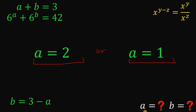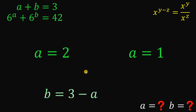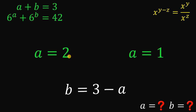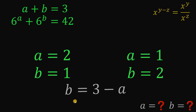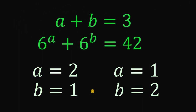Our goal is to find the values of A and B, and recall that B must equal 3 minus A. So if A is 2, then 3 minus 2 means B equals 1. And if A is 1, then 3 minus 1 means B equals 2. And that is our answer to this question.